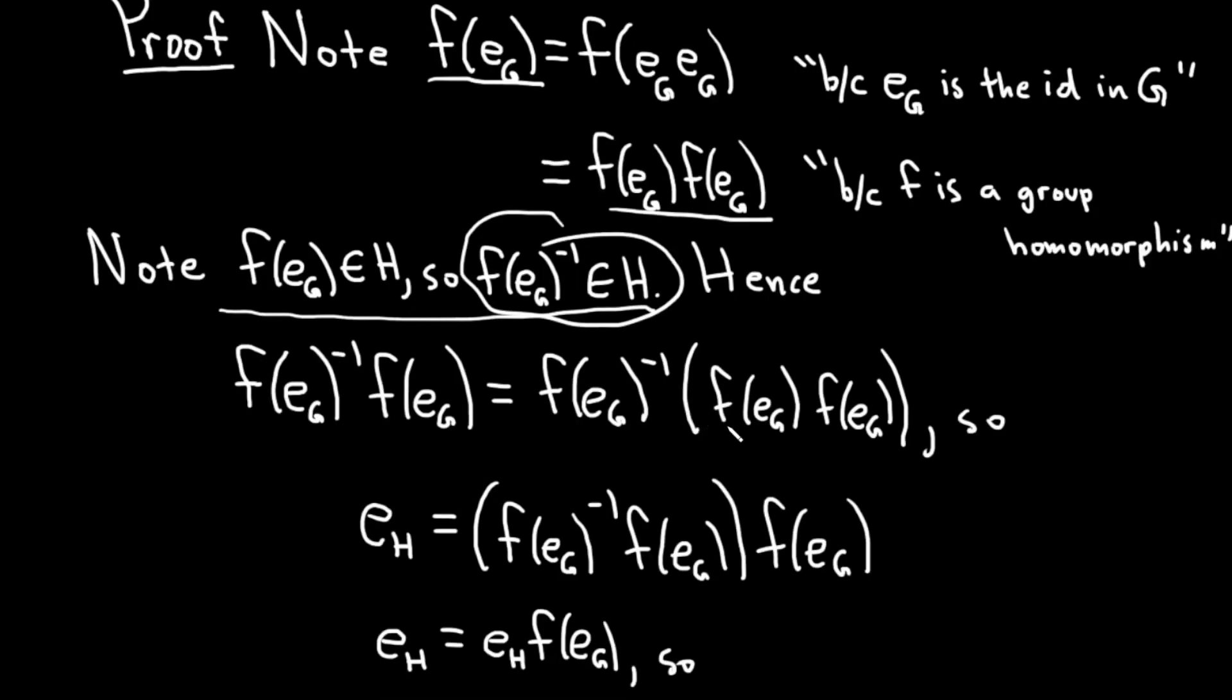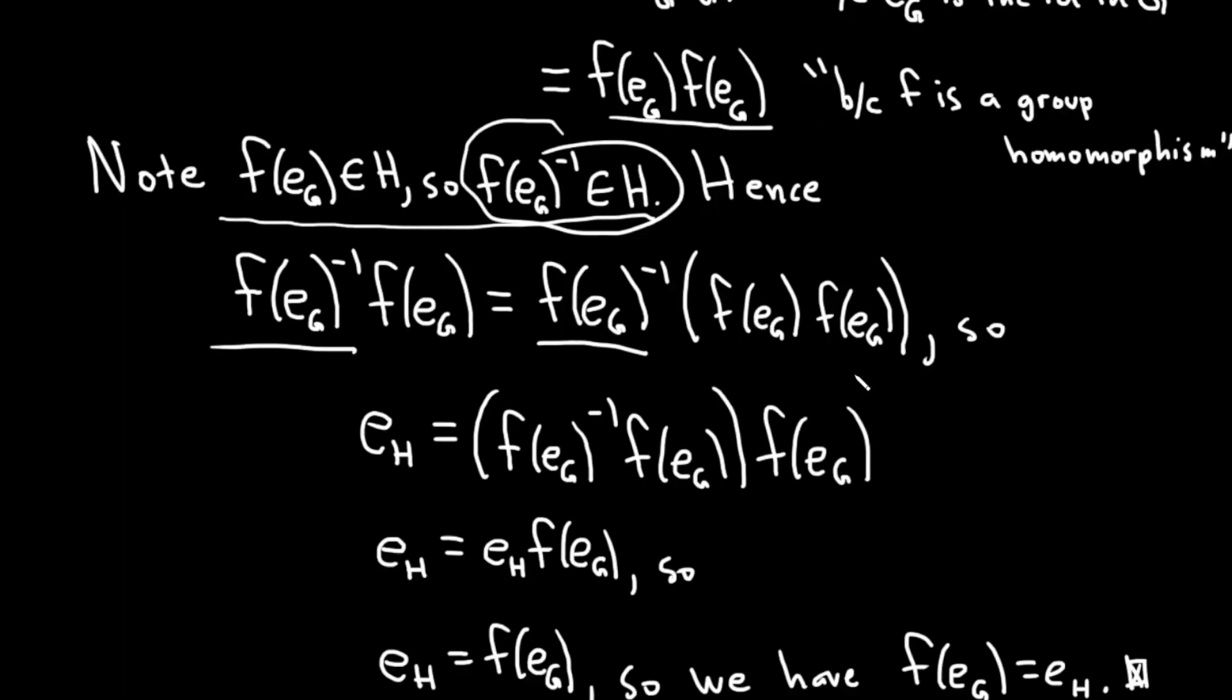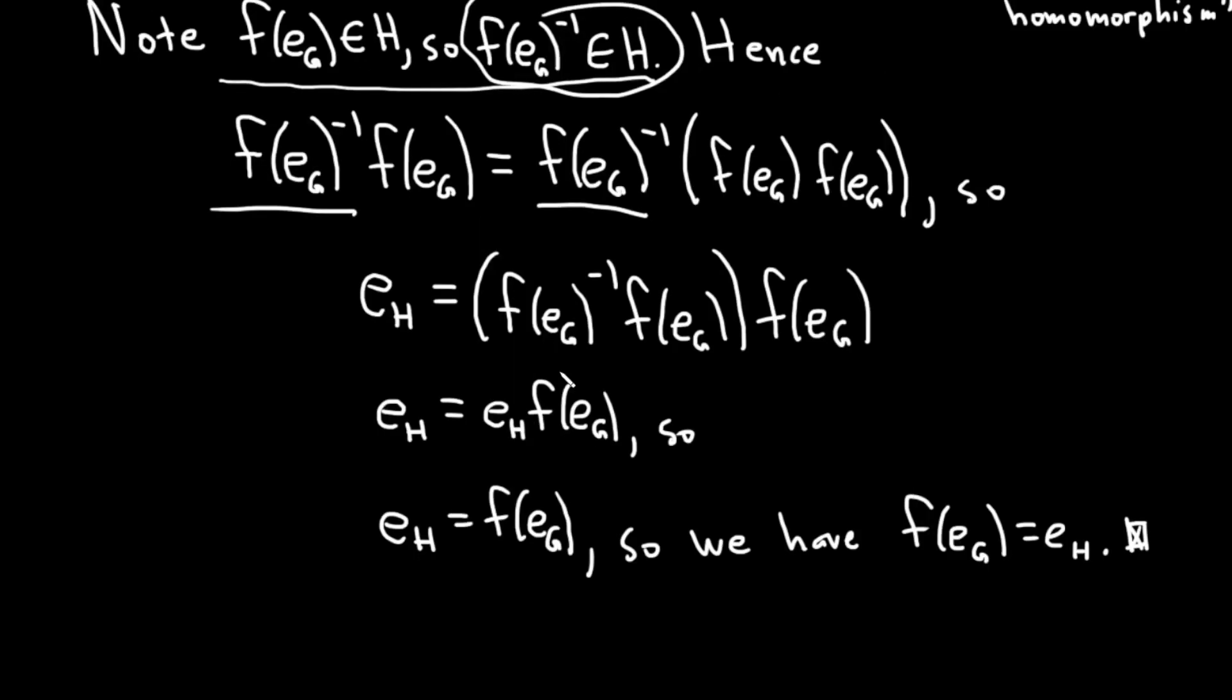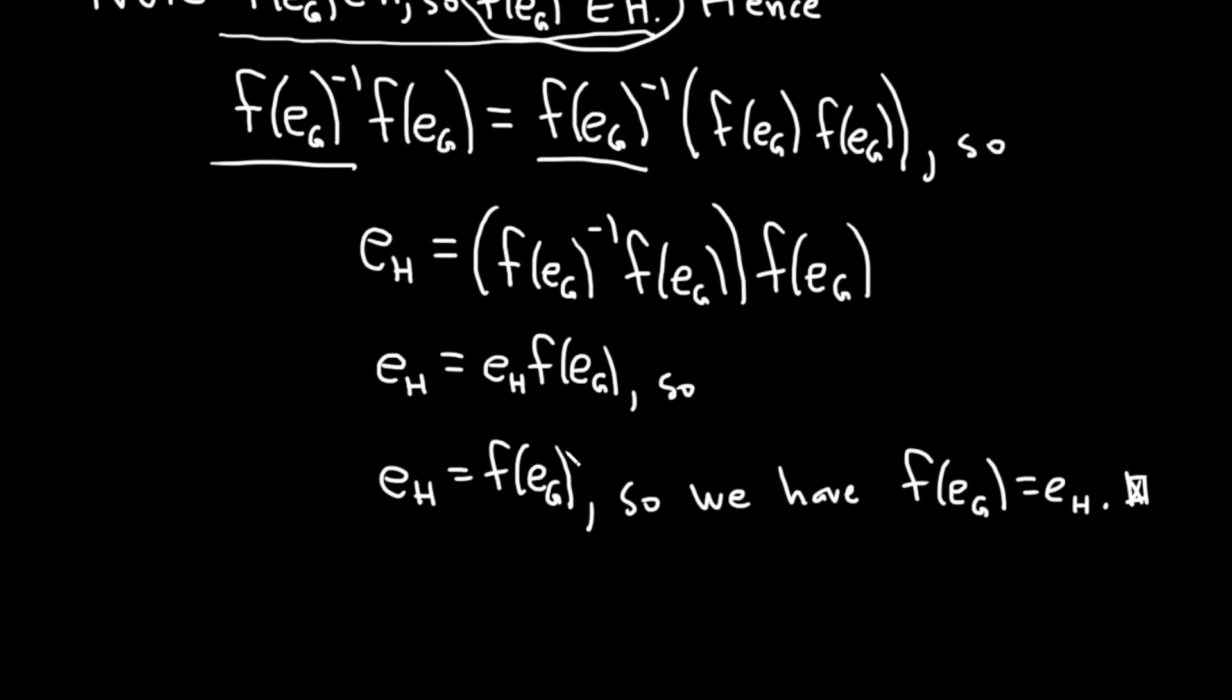Also, when you multiply both sides, notice how I chose to multiply on the left. You don't want to mix and match them. Choose one or the other. We don't know if things are abelian or not and stuff like that. But yeah, hopefully this video has been helpful to someone out there. Until next time, good luck.